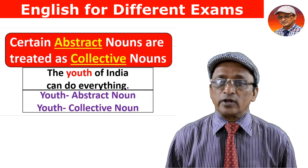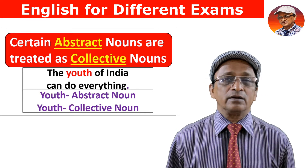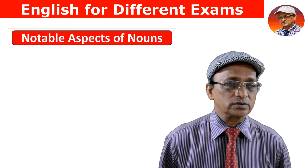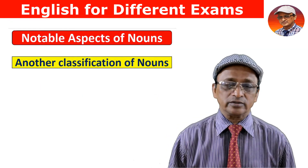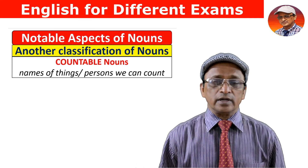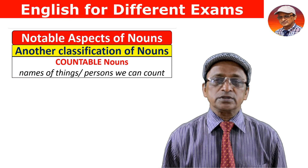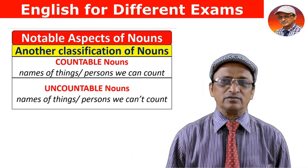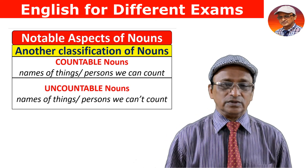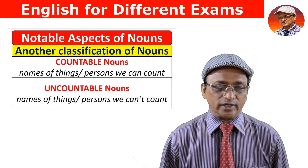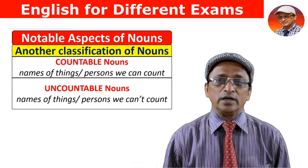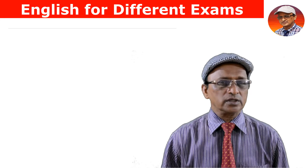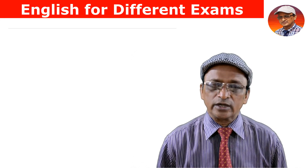Nouns can also be classified into two other categories: countable noun and uncountable noun. Countable nouns are the names of persons and things we can count — for example, books and computers. Uncountable nouns are things we cannot count — for example, water and sugar.